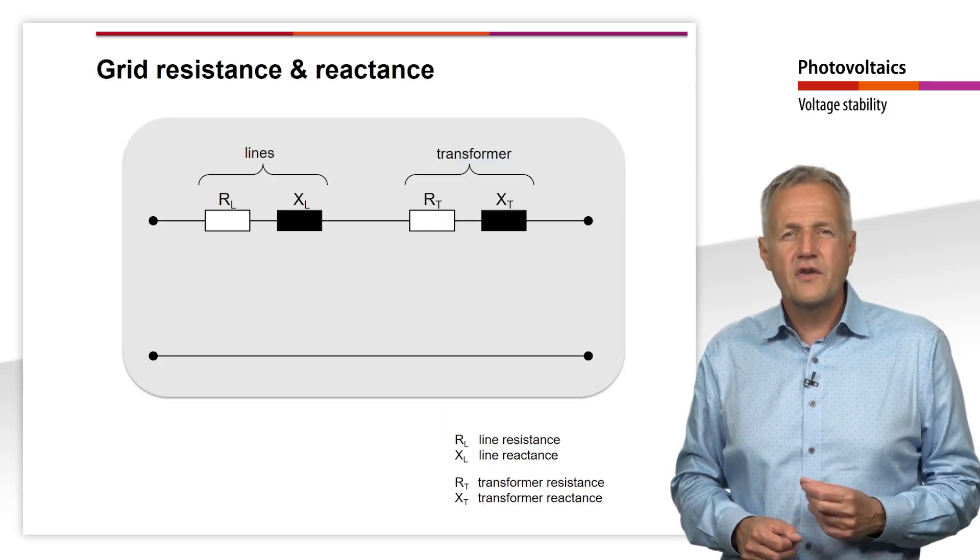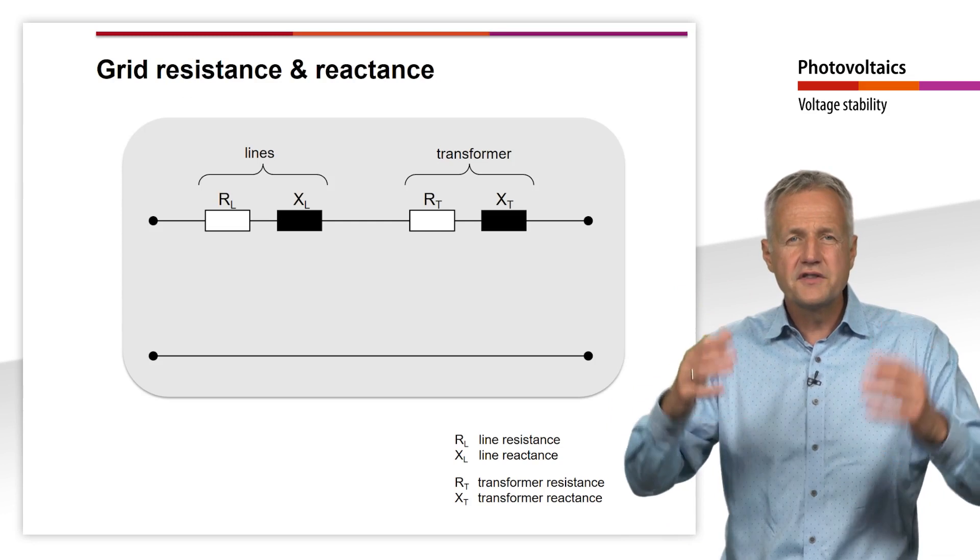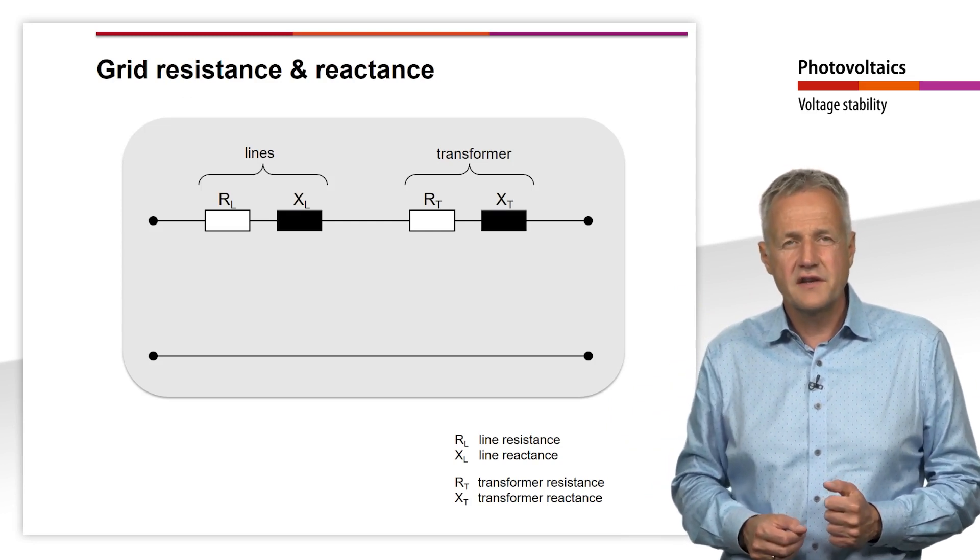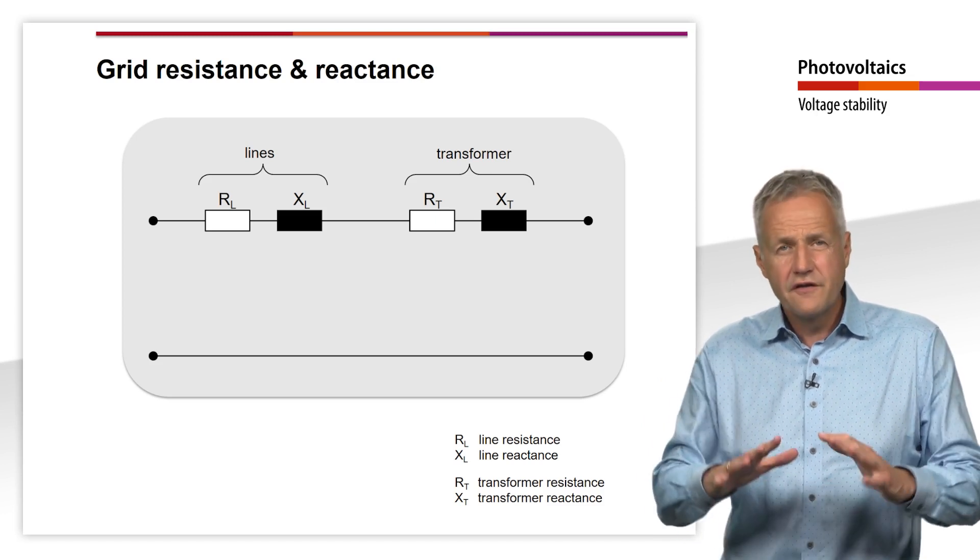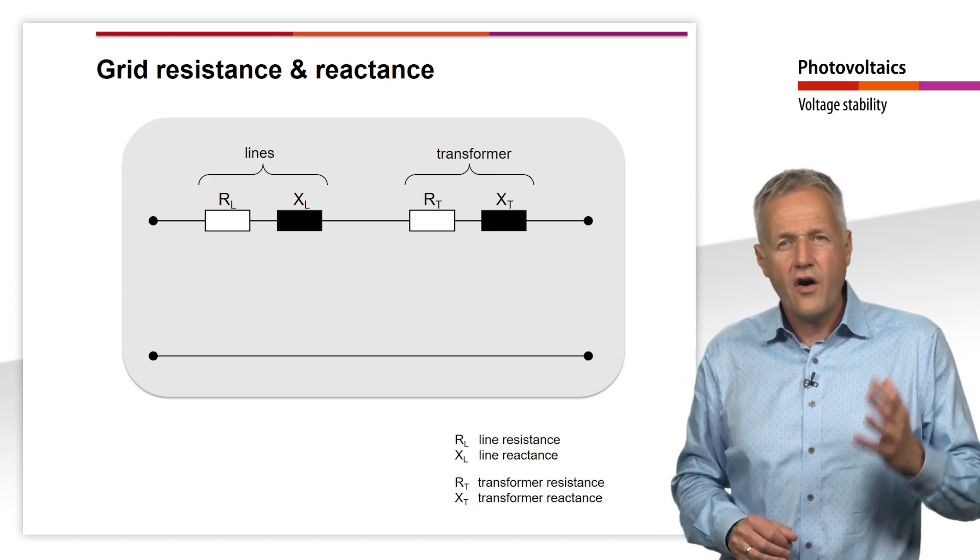Let us now try to calculate how high the voltage increase due to a PV system actually is. To get an idea, we will first create an equivalent circuit diagram of the grid.